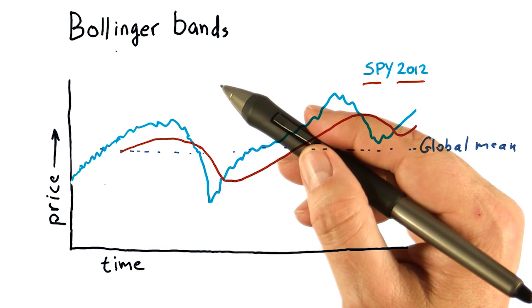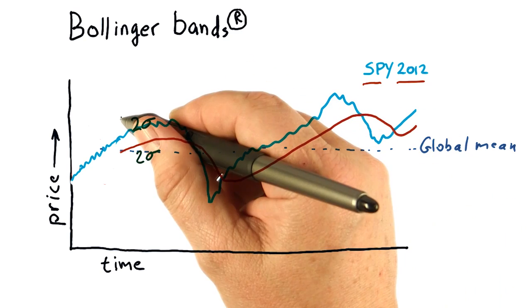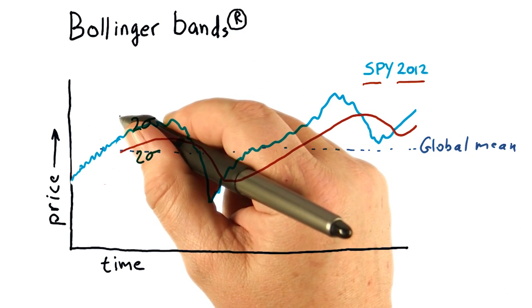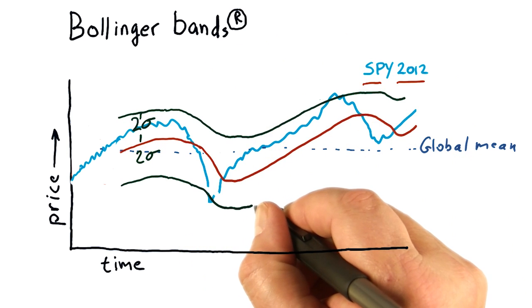John Bollinger in the 1980s came up with something he calls Bollinger Bands. His idea then was to add a band two standard deviations above and two standard deviations below.